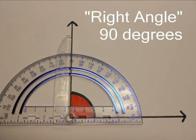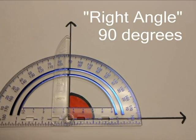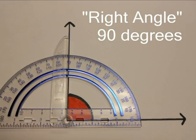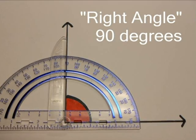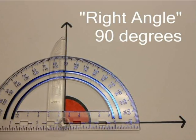Now, as I move the plastic arm, it perfectly lines up to the number 90 on the protractor. This is what we call a right angle. It has a measurement of exactly 90 degrees.